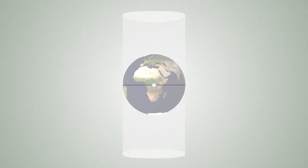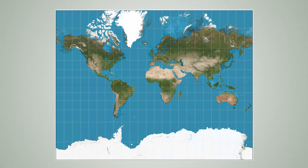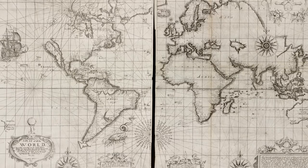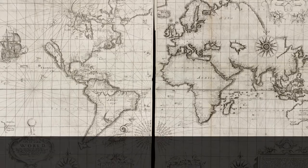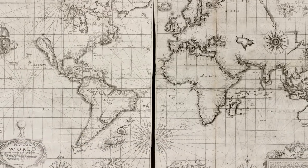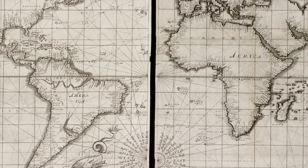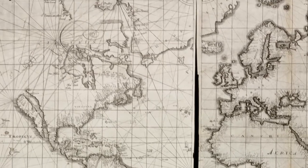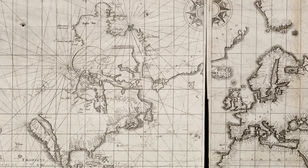So if you have a source of light right at the very center, it will project outwards. And as you move to the North and South Pole, those areas will be exaggerated. One example is the Wright-Moxon map of the world done in the early 1600s. If you look at it, you'll see the information along the equator is fairly accurate in terms of shape and size, but as you move towards the North Pole, Greenland and Northern Canada become greatly exaggerated.